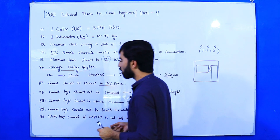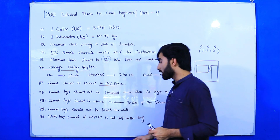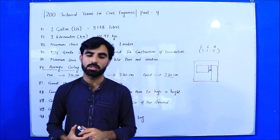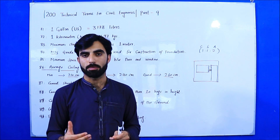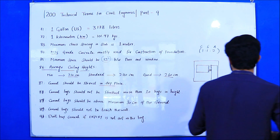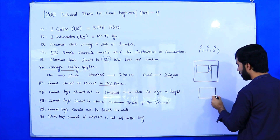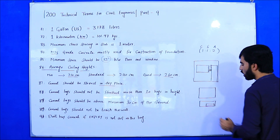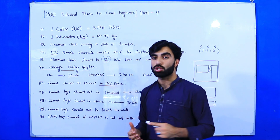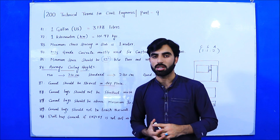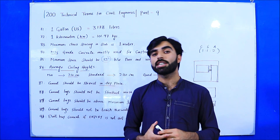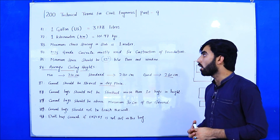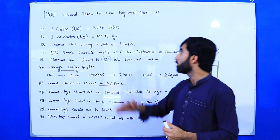Final term: Do not buy cement if the expiry date is not available on the bag. Most cement factories do not place the expiry date on the bag. Check the side of the bag, where the expiry date should be printed. If no expiry date is visible, do not buy that cement for building construction, because the cement may already be expired and there is no way to know.